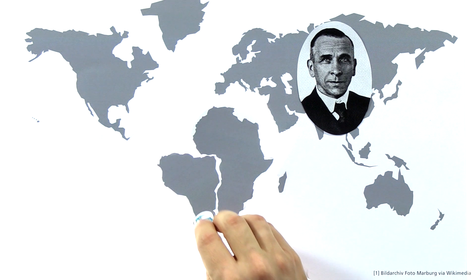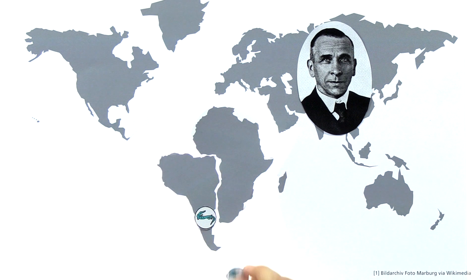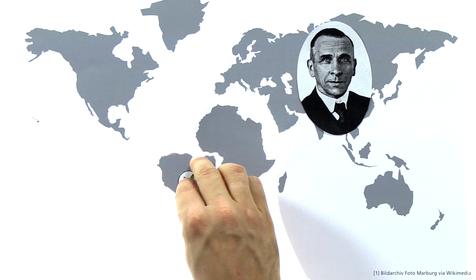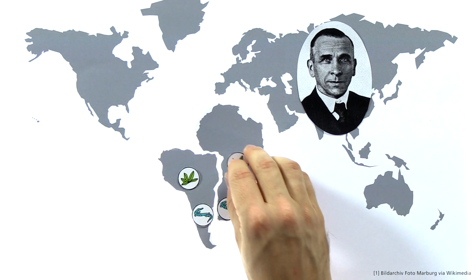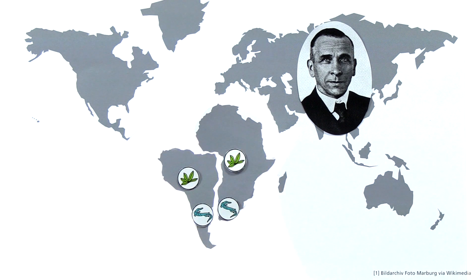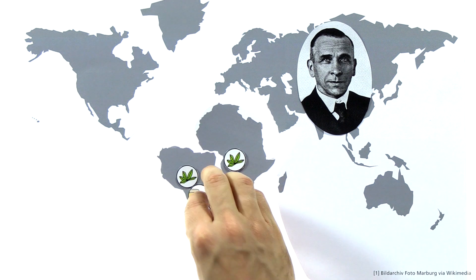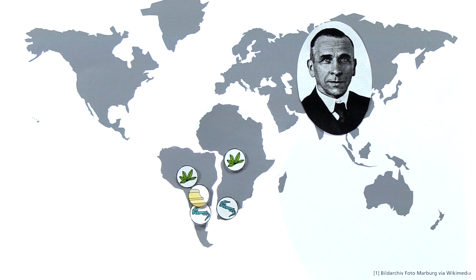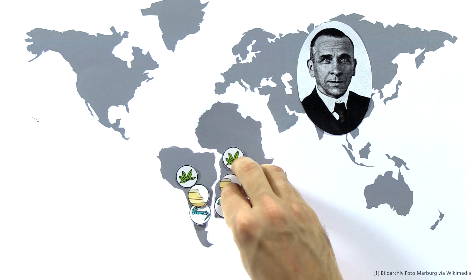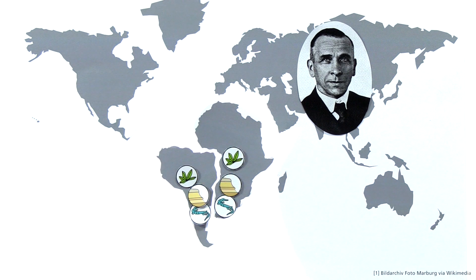Firstly, Mesosaurus fossils as well as those of other animals and plants were found on both continents, and they were found in similar geological rock formations made of clay and chalk. Secondly, the continental outlines of Africa and South America fit together like puzzle pieces.